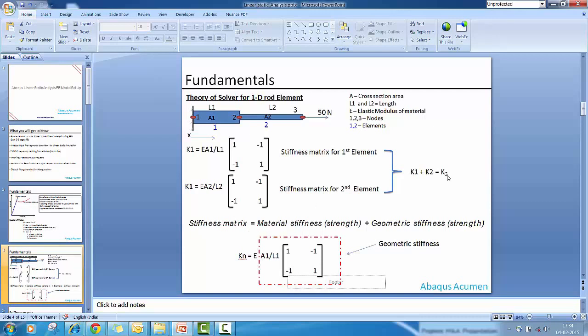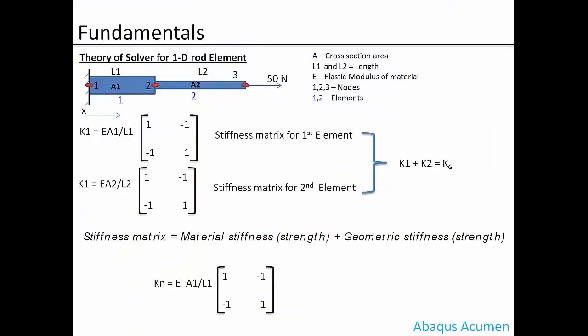When we have this global matrix, we call it the stiffness matrix. A stiffness matrix essentially contains modulus, that is material property, and then followed by geometric stiffness, geometric details. If you see A1/L1 followed by this matrix, this is accounting for the geometric stiffness and E is coming from your material property.